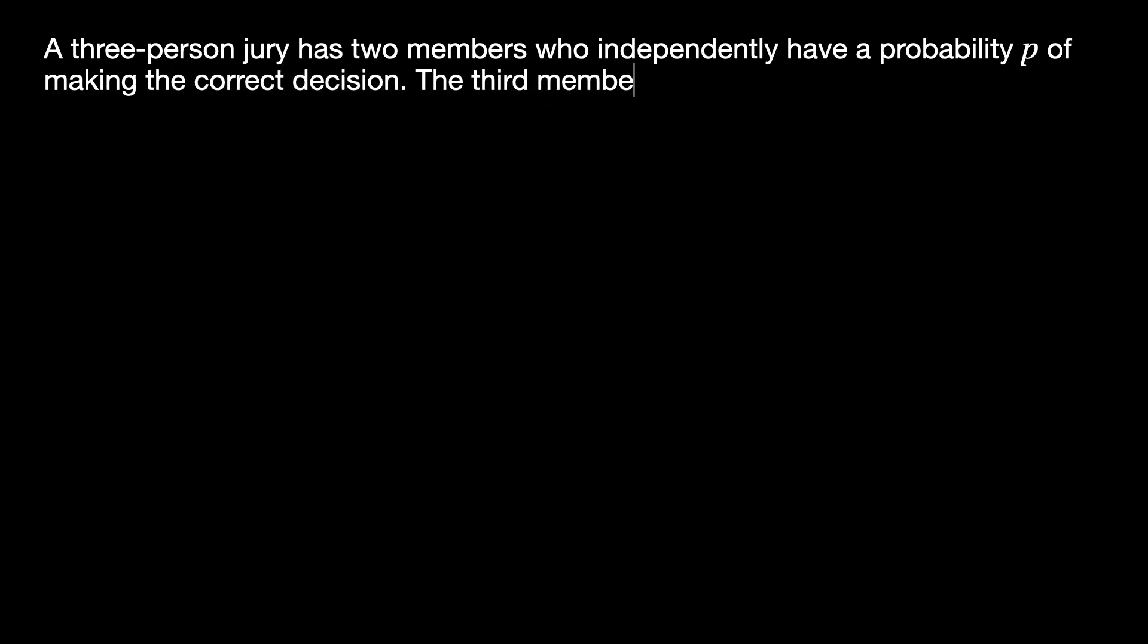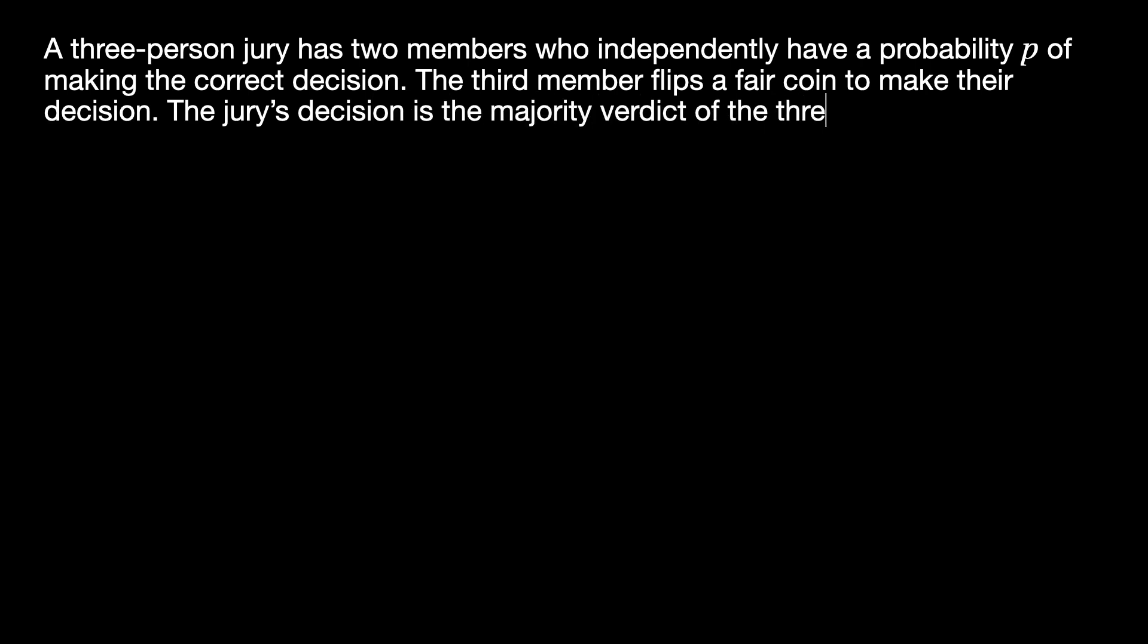A three-person jury has two members who independently have a probability P of making a correct decision. The third member flips a fair coin to make their decision. The jury's decision is the majority verdict of the three members.